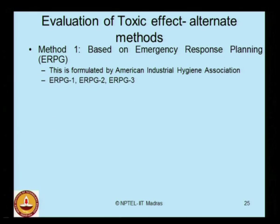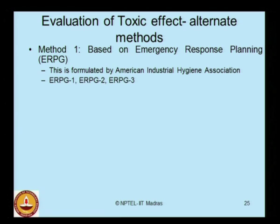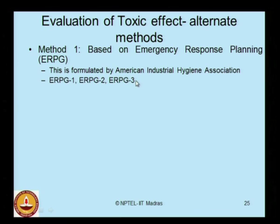Method 1 is based on Emergency Response Planning Guidelines (ERPG), formulated by the American Industrial Hygiene Association (AIHA). ERPG provides hazard distance levels: ERPG level 1, ERPG level 2, and ERPG level 3. A tutorial question is posed: what are ERPG 1, 2, and 3 as explained by AIHA, and what are the technical differences between these three levels of toxic exposure on humans? The previous modules on HAZOP analysis contain answers to these questions.